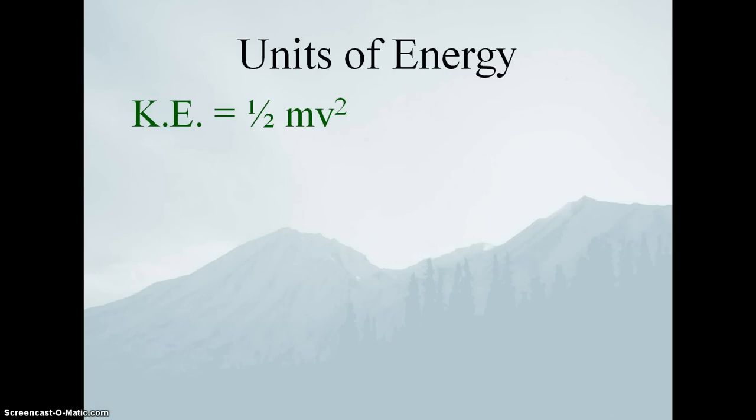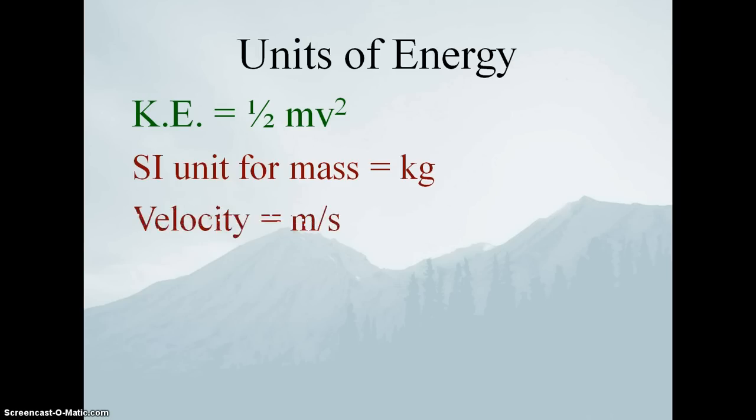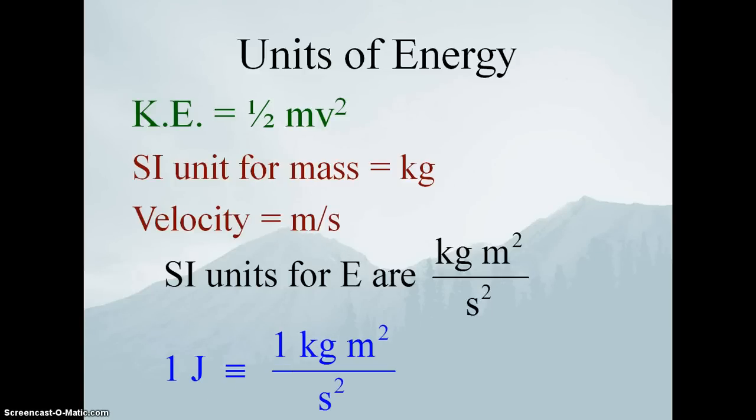Now that ½mv² is going to help us remember what the SI unit for energy is. Remember the equation, kinetic energy is ½mv², and we know that the SI unit for mass is the kilogram. Velocity is a compound unit, distance per unit time, and the SI unit for velocity is meter divided by second. So we have to square that velocity unit. That tells us that the SI units for energy are kilogram meter squared per second squared. Scientists have come up with a nice one-word description of that unit, and that's the joule.